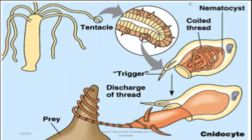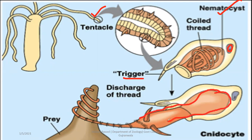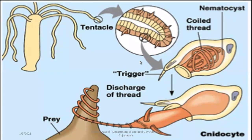You can see the nematocysts here — they are present in the tentacles. In the outer layer of the tentacles, there is a cnidocyte structure at the base, and the coiled structure inside is the nematocyst. When the cnidocil is compressed, the hollow thread projects out from the nematocyst. To paralyze prey, it can release a poison secretion and capture it.